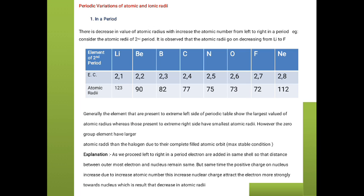Now let's discuss how atomic radius decreases from left to right in the periodic table. As we move from left to right, each time an electron is added, that electron goes to the same shell. That is why the force of attraction between the nucleus and that outermost electron increases. As the force of attraction increases, there is a quenching of radius — a reduction of atomic radii takes place.